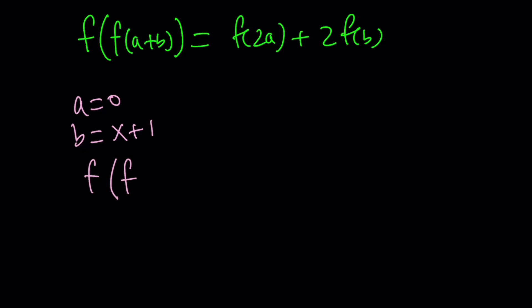So we have f of f of a plus b equals f of 2a plus 2f of b. And again, a and b are integers. We're going to start by replacing a with 0 and b with x plus 1. Let's go ahead and do that. On the left hand side, we're going to get f of f of x plus 1 equals f of 0 plus 2 times f of x plus 1. So that's the first equation we're going to get.